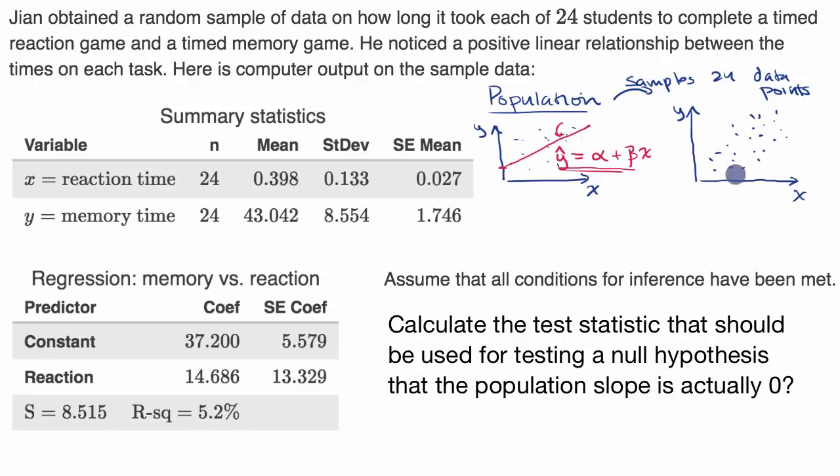You input those data points into a computer, and it does a regression line, and it's trying to minimize the square distance to all of these points, so it gets a regression line that looks something like this.